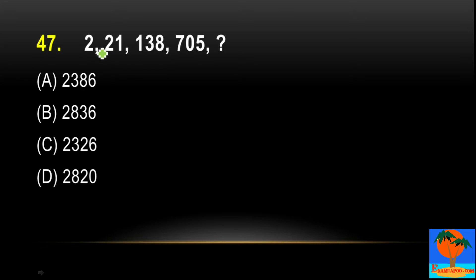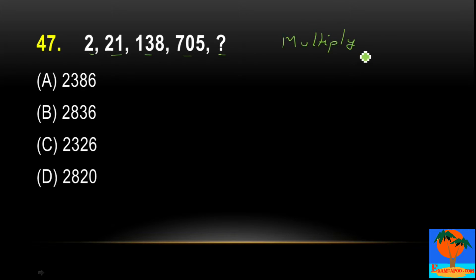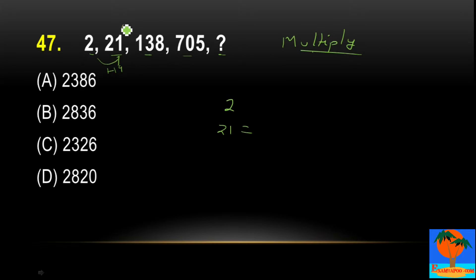Moving to question 47: the series is 2, 21, 138, 705 — find the next term. Here also the terms increase gradually, so multiplication is happening. The difference between first and second term is 19, and between second and third is 117. By observing the differences carefully, we can find the pattern.